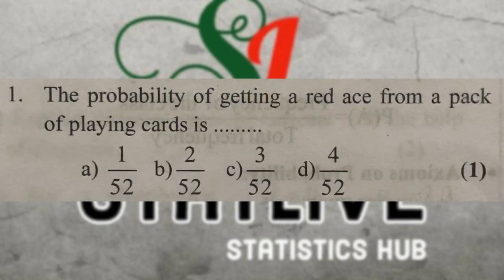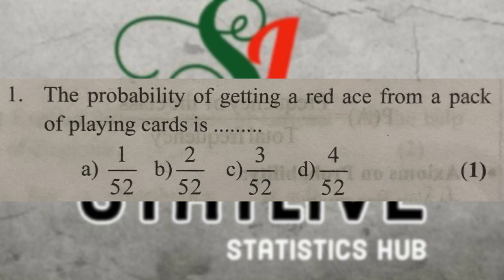First question: the probability of getting a red ace from a pack of playing cards. In a pack of 52 cards, we have red cards and black cards. The cards are divided into two colors. In the 52 cards, we have 2 red aces and 2 black aces. The probability of getting a red ace is 2 by 52.